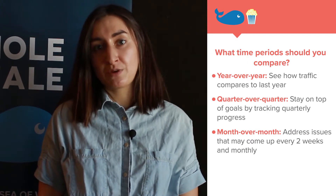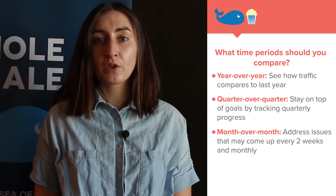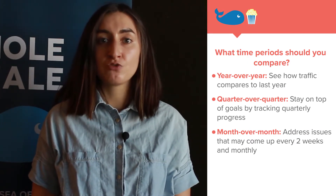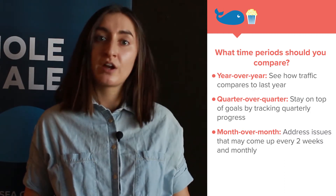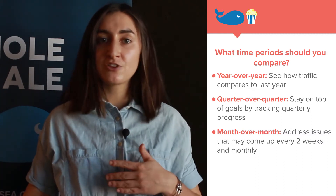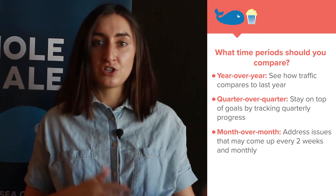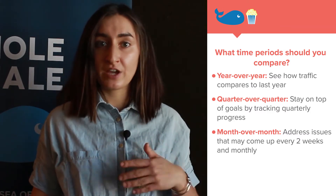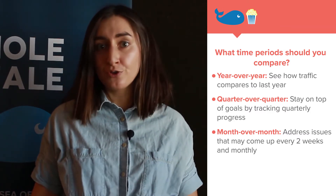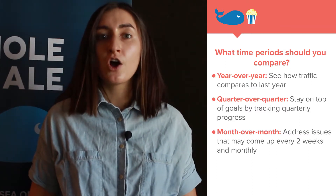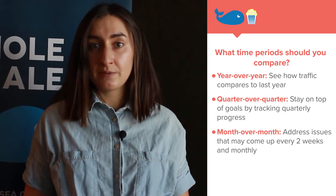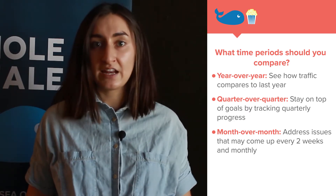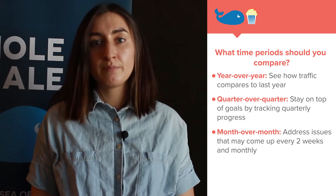Sprint-over-sprint and month-over-month: we recommend running a fire check every sprint or every two weeks. Look at the last two weeks versus the two weeks prior, and then look at month-over-month. Are your goals tracking? Are there any crazy dips in traffic? Are those dips on purpose, or is data getting lost? Make sure you address any issues immediately.